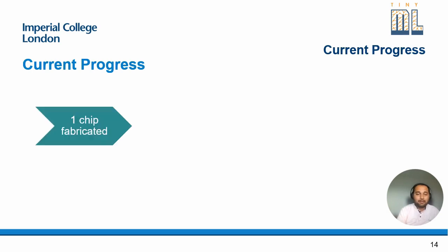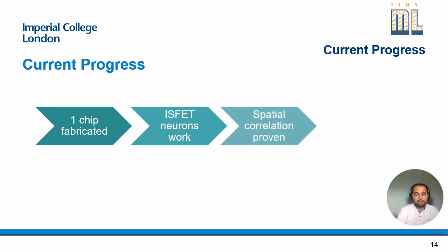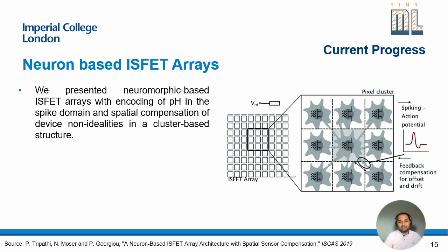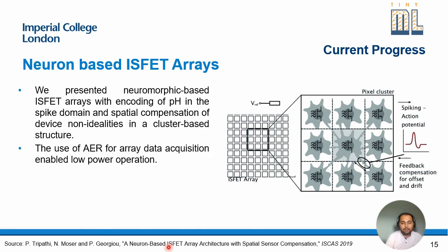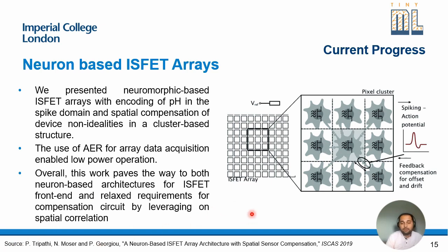My current progress includes fabrication of a chip, demonstrating that ISFET neurons work based on that chip, and spatial correlation proven through two different chips. We have also worked on a TinyML model for classification of nucleic acid amplification. On the neuromorphic side, we present neuromorphic-based ISFET arrays where we encode pH into the spike domain. Device non-idealities can be treated as a cluster, and cluster-based structures handle non-ideal effects. We also proposed the use of AER for array data acquisition, enabling low-power operation, and this work paves the way for neuron-based architectures for ISFET front-ends while relaxing compensation circuit requirements by leveraging spatial correlation.